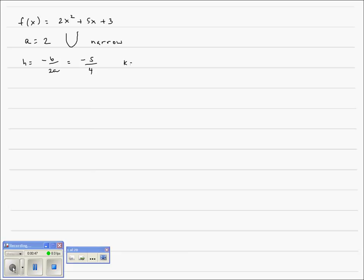Our k value for our vertex is what we get when we work the function for that negative 5 fourths. So that'll be 2 times our negative 5 fourths squared, which would be a positive 25 sixteenths, plus 5 times our negative 5 fourths. So that'll be negative 25 fourths plus our 3. Let's simplify this a little bit. The 2 and the 16th cancels, leaves me an 8 low.